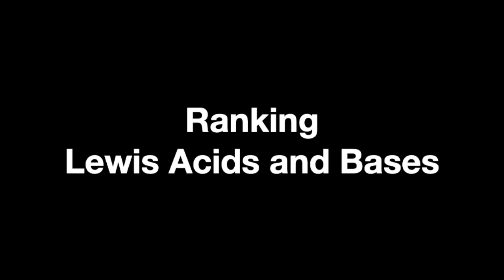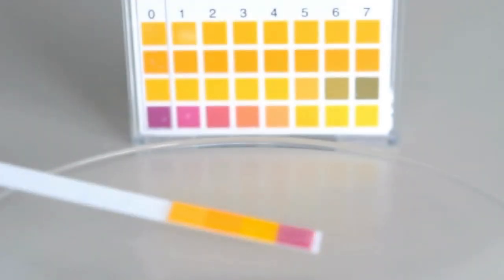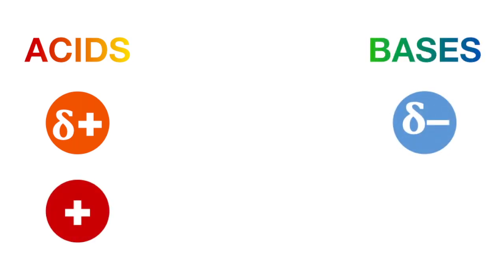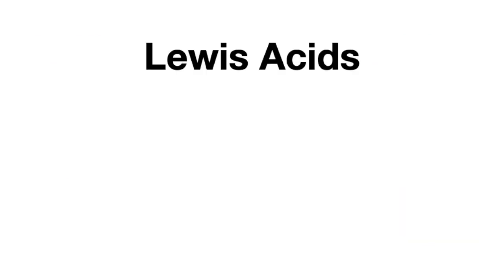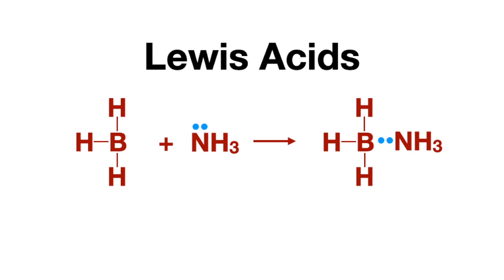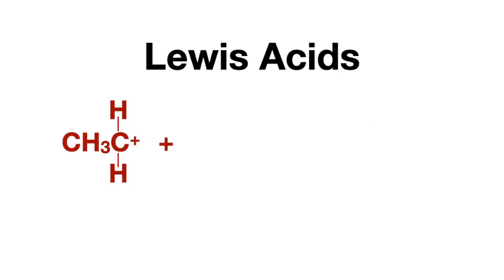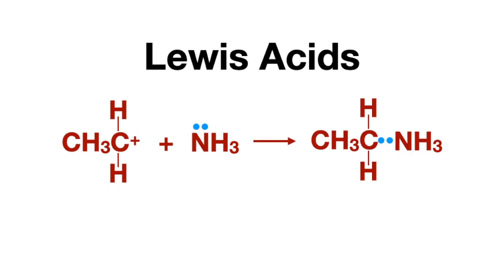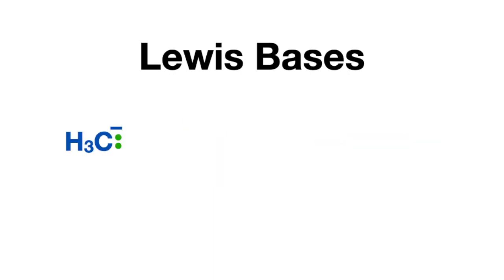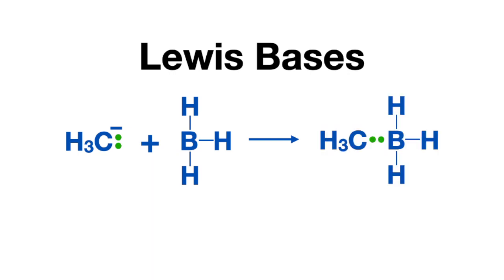For questions that ask you to rank Lewis acids and bases — which are the acids and bases without protons or hydroxides — I want to show you a trick to quickly and easily rank them every time. Acids are generally partially or formally positively charged atoms or molecules, whereas bases are generally partially or formally negatively charged atoms or molecules. Lewis acids are lone pair acceptors, meaning they're atoms or molecules that do not have full octets and can accept a lone pair in bond formation. Lewis acids can also be positively charged atoms or molecules that can accept a lone pair and form a bond with a Lewis base. Lewis bases are lone pair donors — they donate their lone pair to form bonds with Lewis acids. Lewis bases can also be negatively charged atoms or molecules, and having a negative charge simply means they have an extra lone pair to contribute to forming a bond with a Lewis acid.